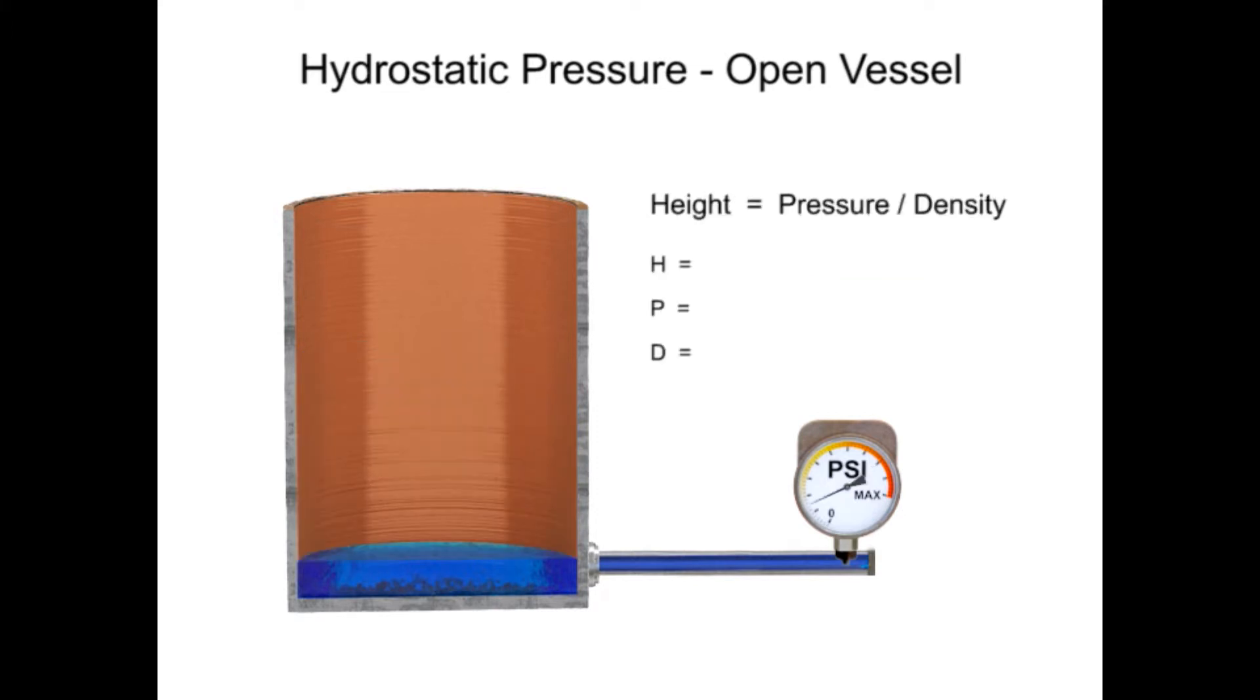To find pressure, a gauge is placed at the bottom of the vessel. With the water having a density of 0.0361 pounds per cubic inch, the level of the fluid is calculated by dividing the head pressure by the density of the fluid.